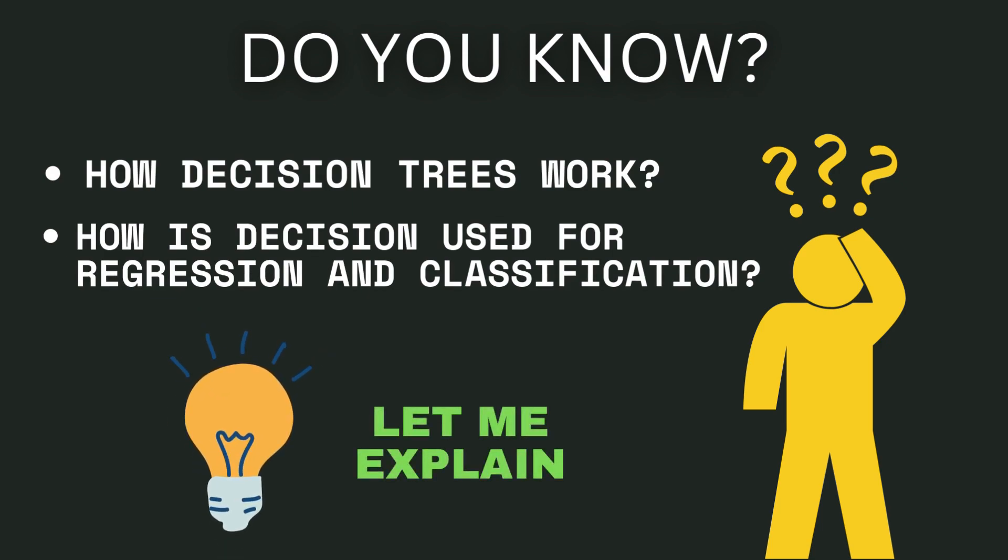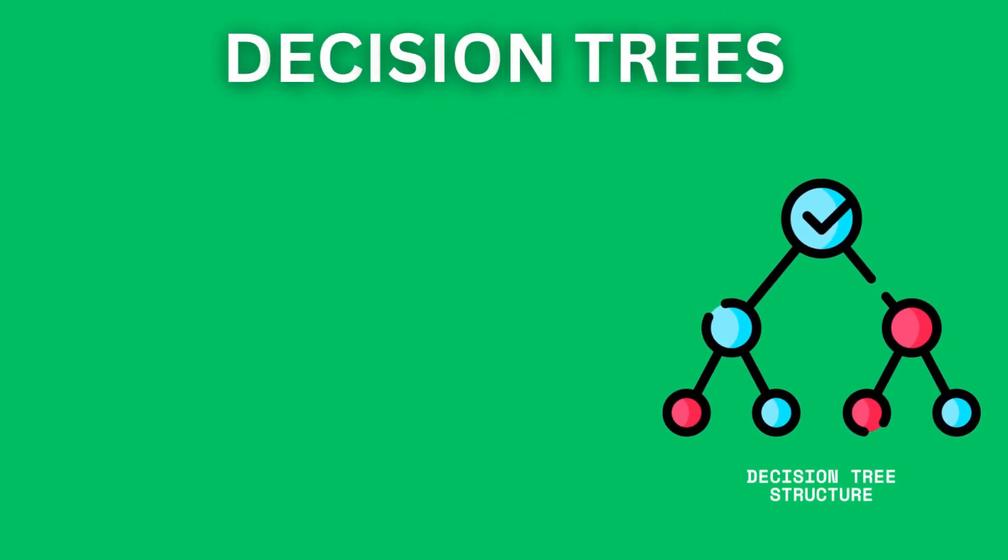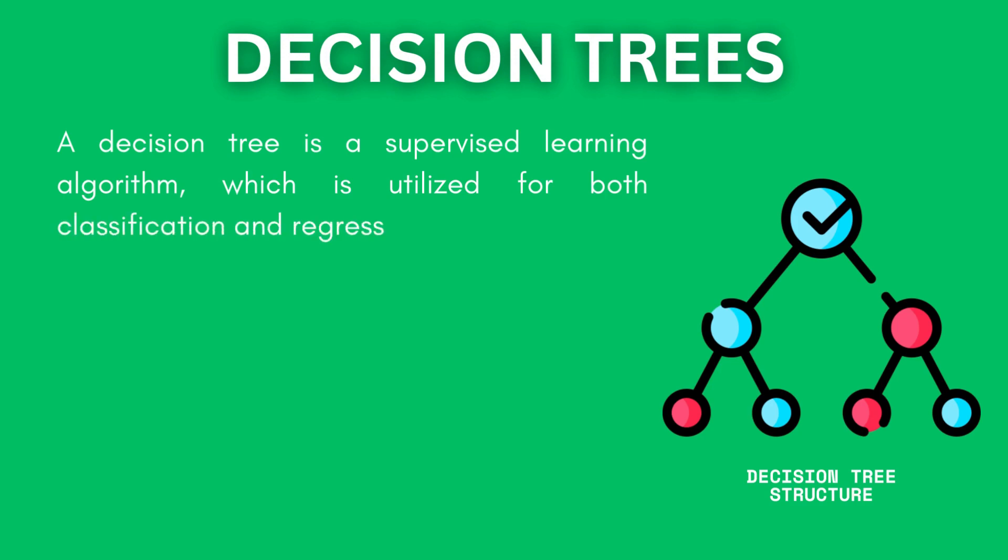So let me just explain you what are decision trees first. Decision trees are actually supervised machine learning algorithms that can be used for classification as well as regression tasks because it can work on both categorical data as well as continuous data.